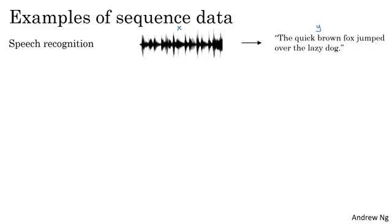Both the input and the output here are sequence data, because X is an audio clip that plays out over time, and Y, the output, is a sequence of words. Sequence models such as recurrent neural networks and other variations have been very useful for speech recognition.